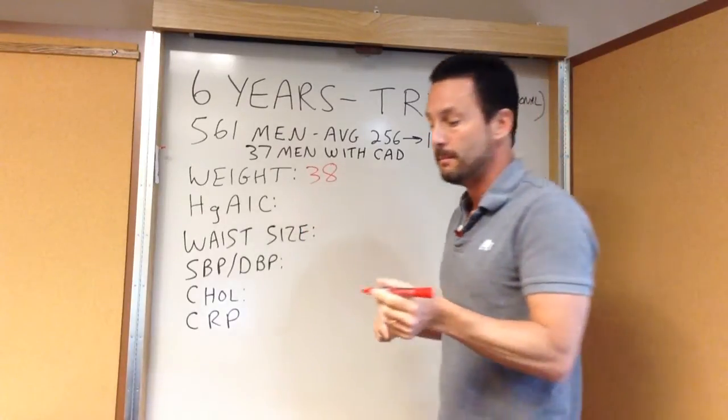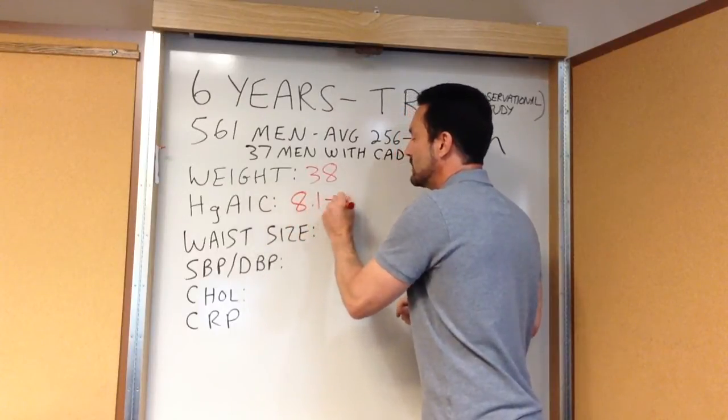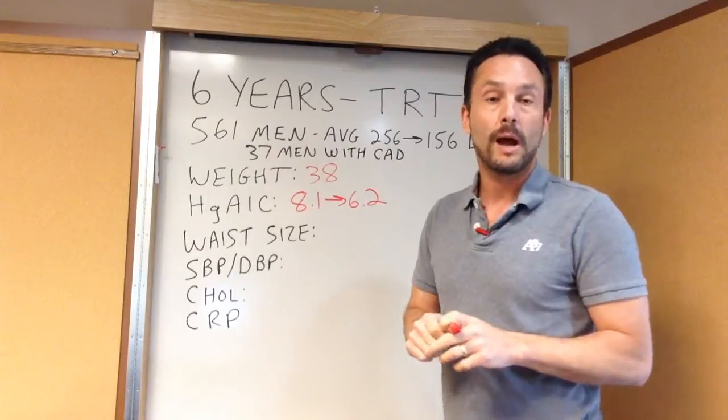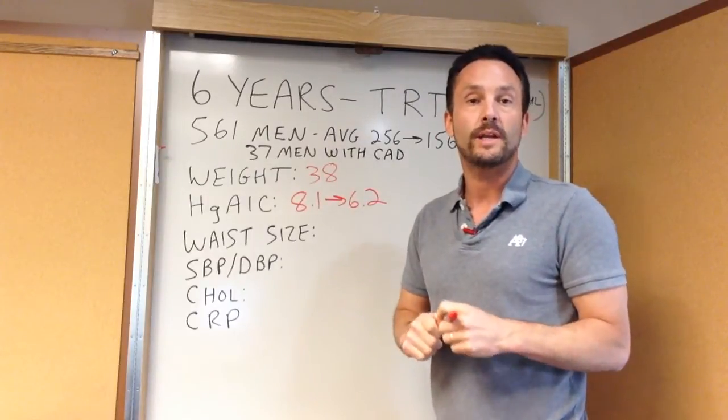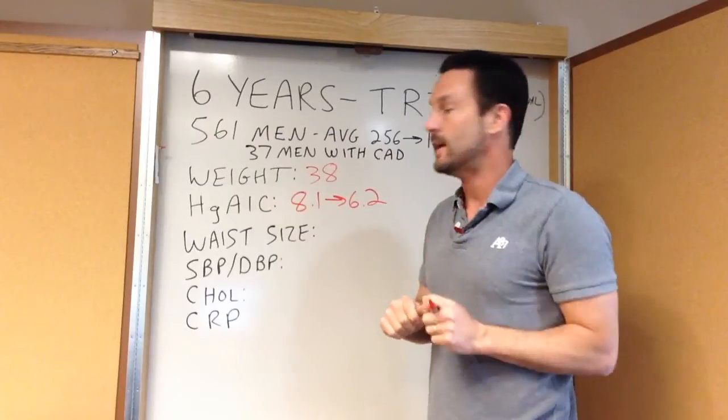Their hemoglobin A1C, which is a measure of diabetes, went from 8.1 down to 6.2, which is a 1.9 drop or about a 56-point average reduction in their blood sugar from the beginning to the end of the study.